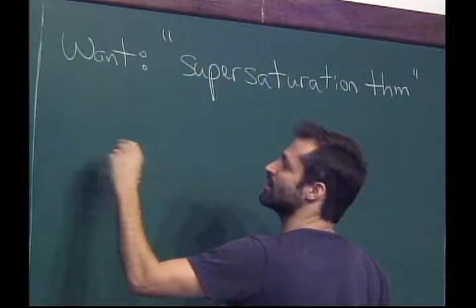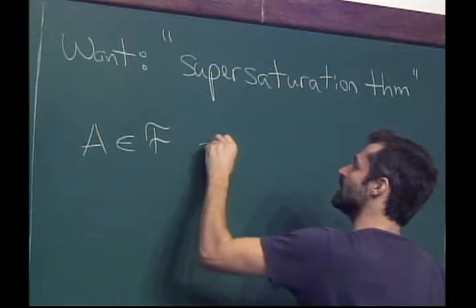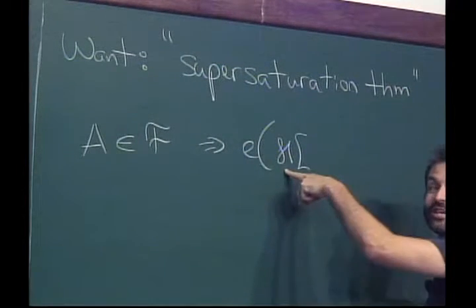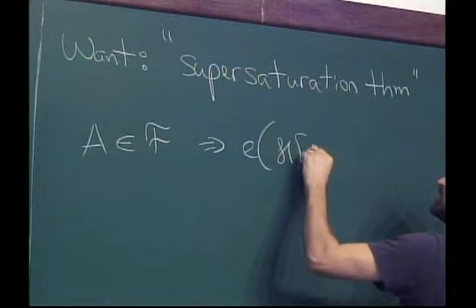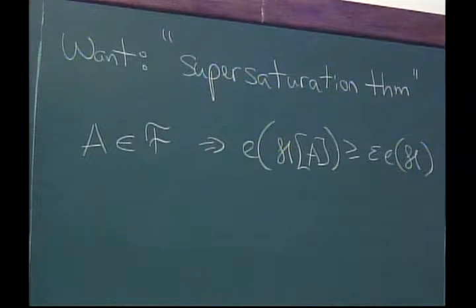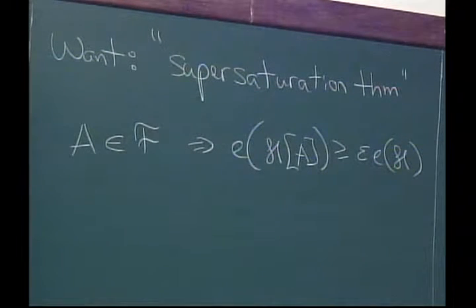A supersaturation theorem for F says: if you're in F, then you contain a positive fraction of all of the edges of your hypergraph. Now H is going to be a hypergraph — H takes the place of A (or G).